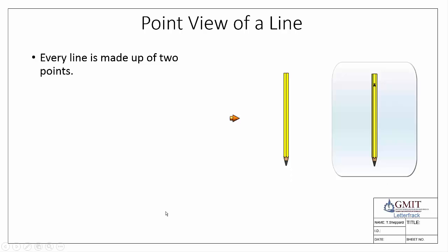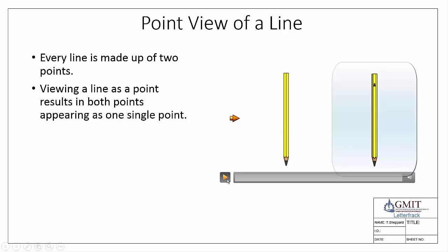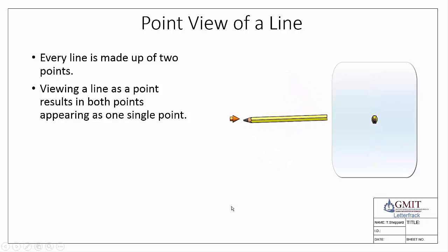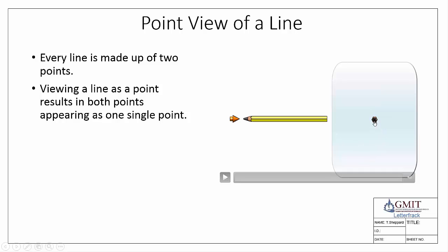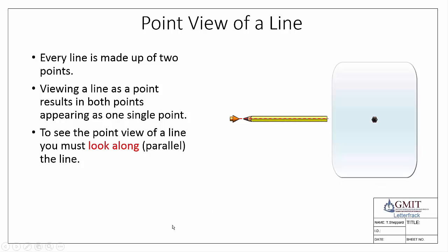Viewing a line as a point results in both points appearing as a single point. So if we look along the pencil, the front of the pencil and the back of the pencil will appear as one single point — that's what the point view of a line is. To see the point view of a line you must look along, or in graphical terms parallel with, the line.